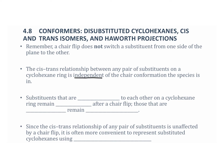Substituents that are cis to each other on a cyclohexane ring remain cis to each other after a chair flip — they're just flipping to the other side of the plane but still on the same side of the ring. Those that are trans remain trans; they're still on opposite sides after a ring flip. Since the cis-trans relationship is unaffected by a chair flip, it's often more convenient to represent substituted cyclohexanes using a Haworth projection.